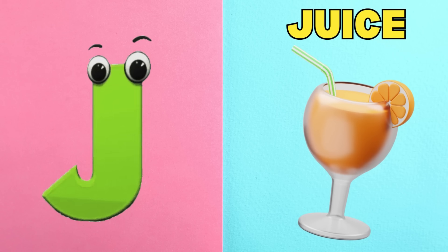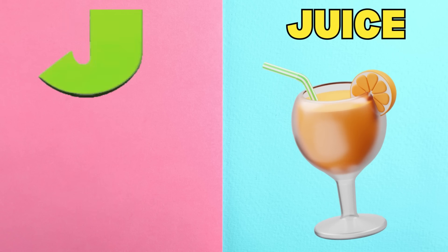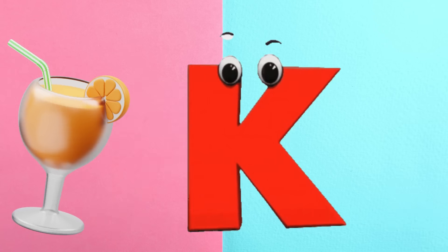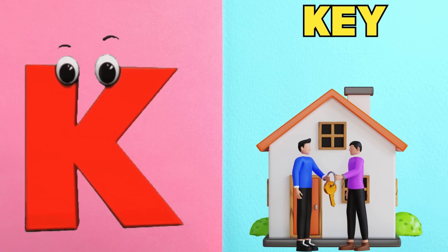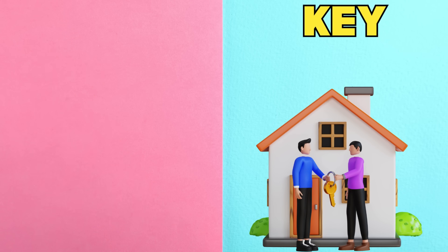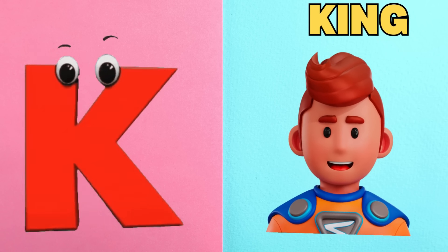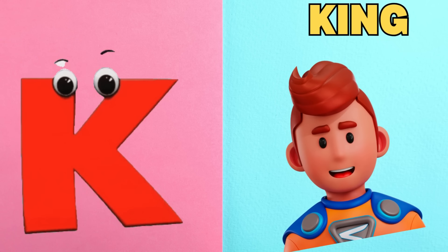J is for Juice. J, J, Juice. K is for Key. K, K, Key. K is for King. K, K, King.